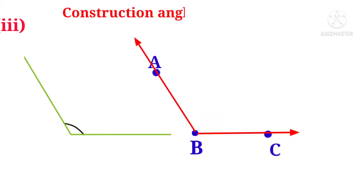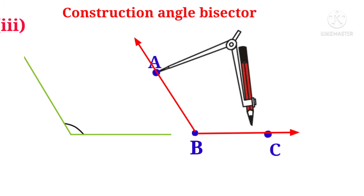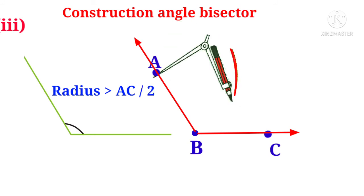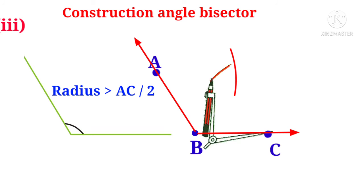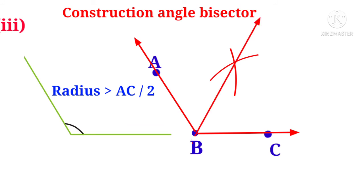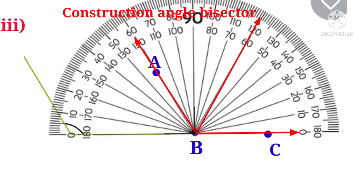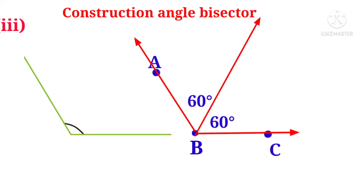Let us construct an angular bisector for angle ABC. Take the compass, with more than half the length of AC as radius. With center A, draw an arc. With center C and the same radius, draw another arc cutting the previous arc. Connect the intersection of the arcs with point B using a ray — this is the angular bisector. The protractor shows 60 degrees, so the total 120-degree angle is divided into two equal angles of 60 degrees and 60 degrees.